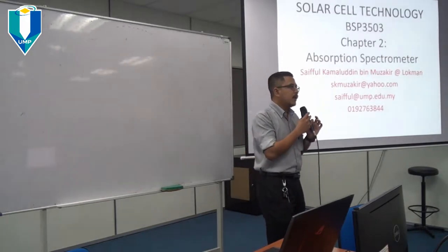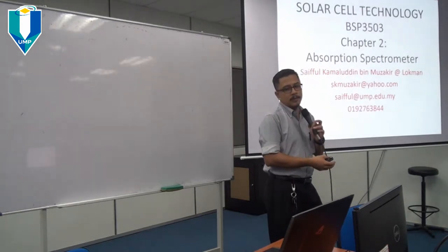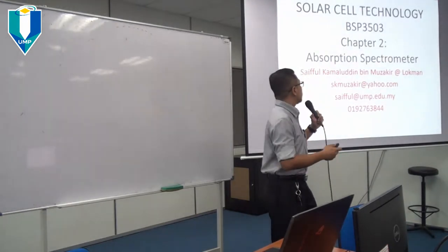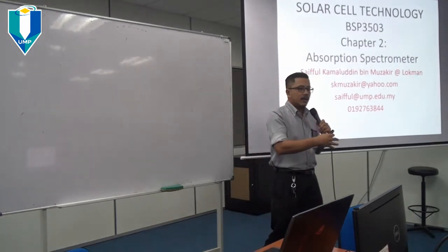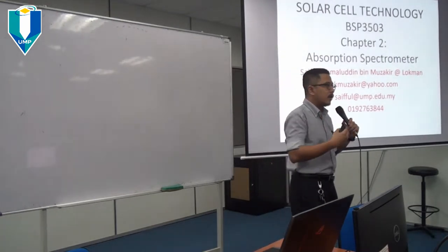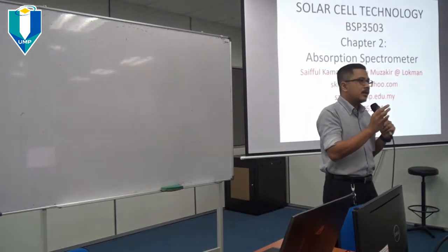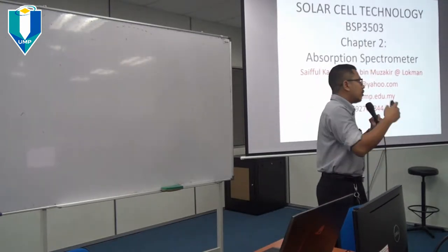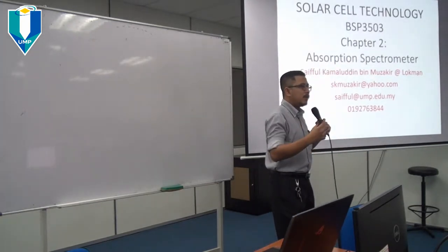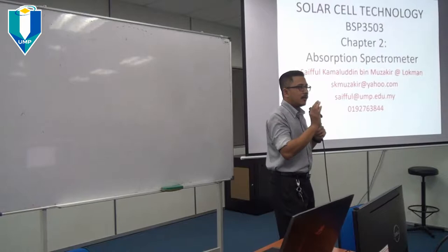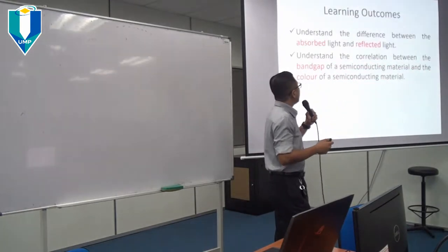What are we going to study? The absorption of light — how much light is being absorbed. So in this second chapter, we will discuss the instrument and about the light: how much light will be absorbed by the semiconductor, and how we are going to analyse the results. Today we discuss light first, and next week we will discuss data analysis and characterisation.